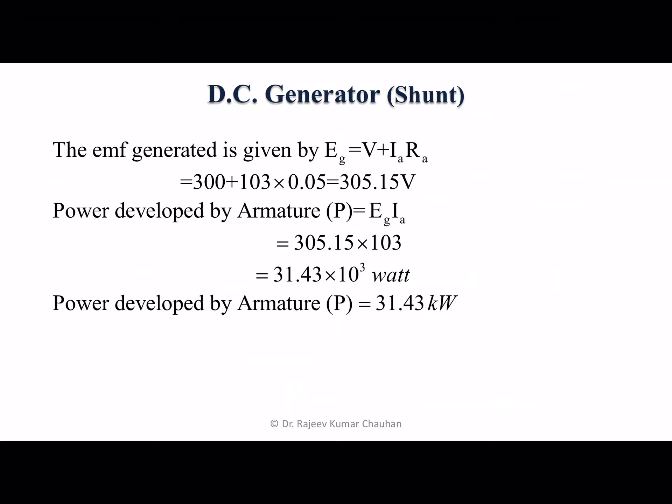The EMF generated is given by Eg equals V plus IA times RA, which is the voltage drop in the armature plus terminal voltage. We know the terminal voltage is 300, armature current is 103, and armature resistance is 0.05, so the EMF equals 305.15 volt.